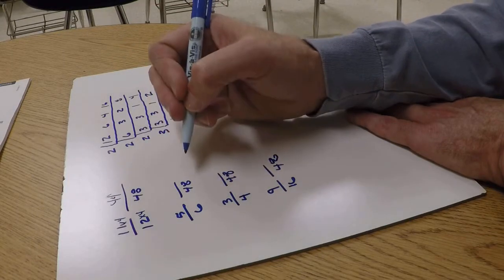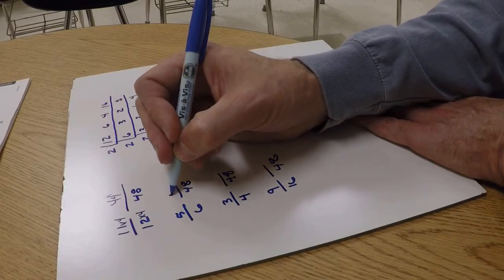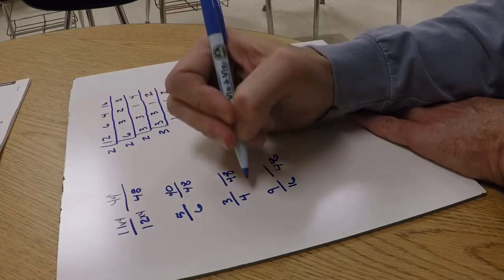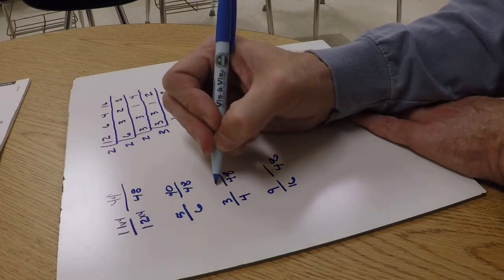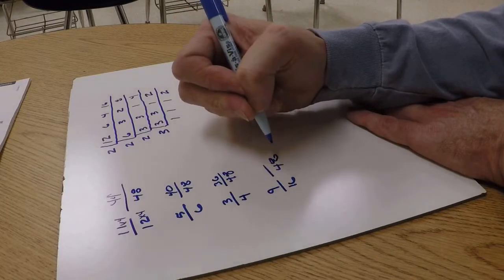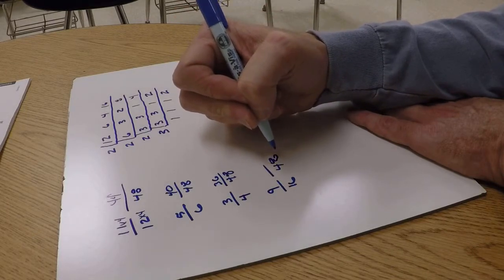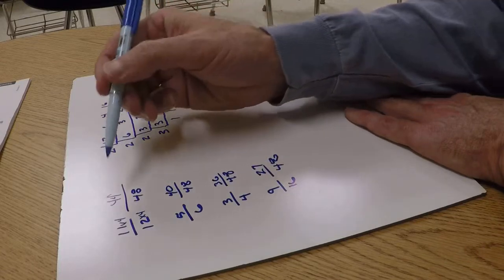How many times will 6 go into 48? Well, 6 times 8 is 48, so 8 times 5 would be 40. 4 will go into 48, 12 times, so 12 times 3 would be 36. 16 times 3 would be 48, so 9 times 3 would be 27.